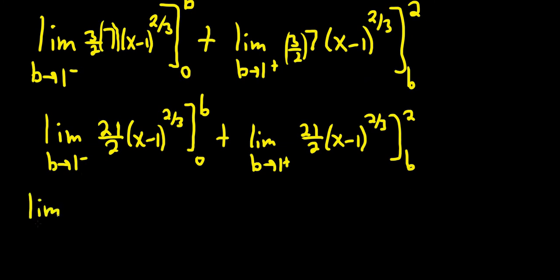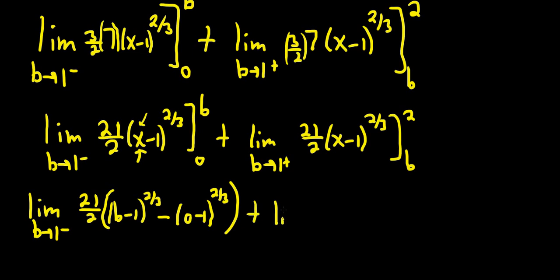So this is the limit as b approaches 1 from the left. So first, you plug in the b. So I'll leave the 21 halves here. So we'll get b minus 1 to the 2 thirds minus. And then you plug in 0. So 0 minus 1 to the 2 thirds. So plug in b for the x. Subtract. Plug in 0 for the x. And then left the 21 halves out. Plus, we have another limit here.